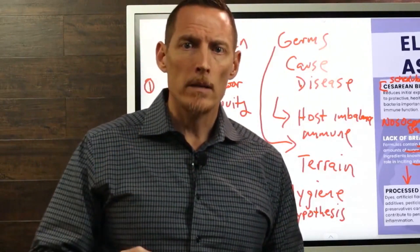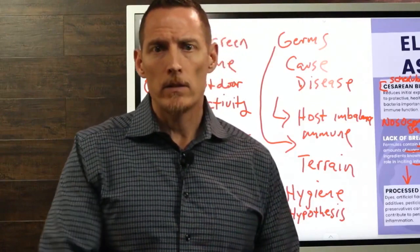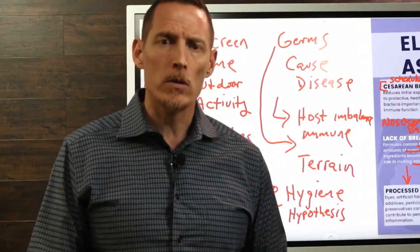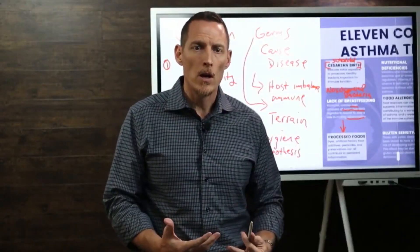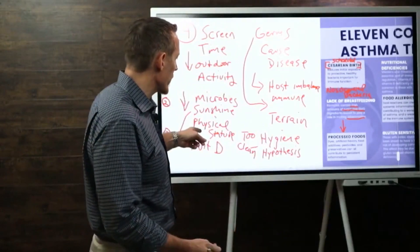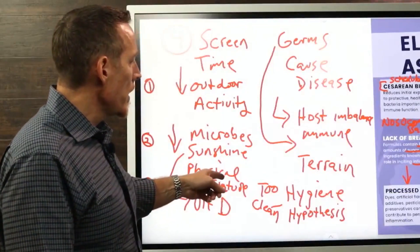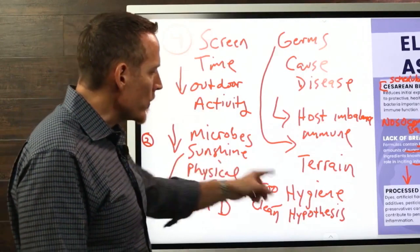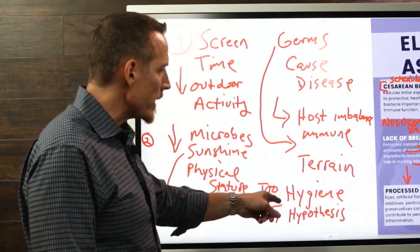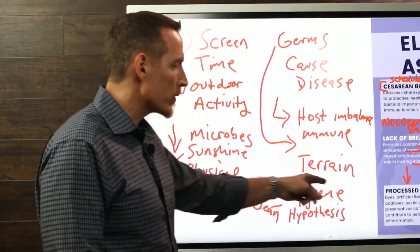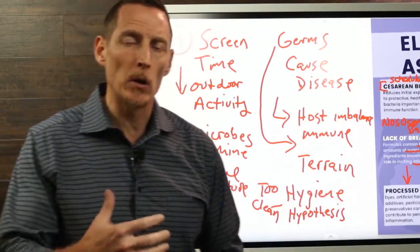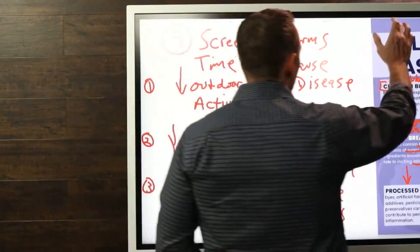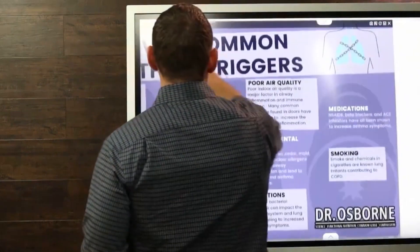When your body doesn't get trained to fight external microbes, allergens, and things of that nature, your immune system never gets trained — it never gets to exercise. Just like your physical body when you don't go outside, if you're living in a hyper-hygienic environment, your immune system also atrophies and gets weak. The cleaner people are, the more they tend to develop autoimmune disease; the dirtier people are, the more they tend to develop infection.